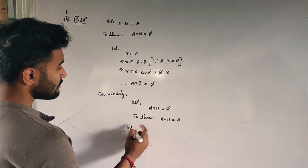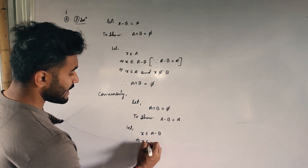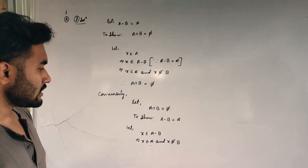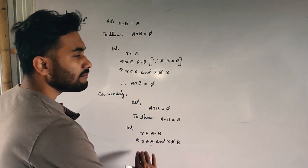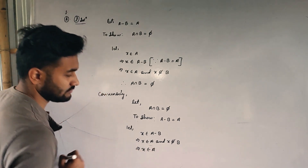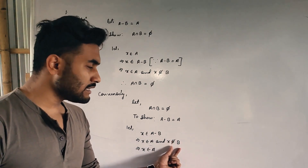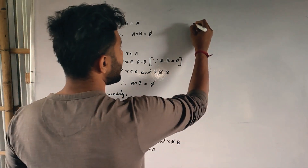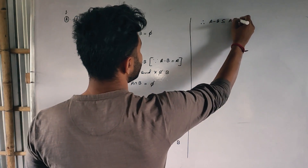Let x belong to A minus B. By definition, this means x belongs to A and x does not belong to B. Since x belongs to A, we can simply say x belongs to A — forget about the B part. Therefore, x belongs to A minus B implies x belongs to A. So A minus B is a subset of A. That is equation 1.